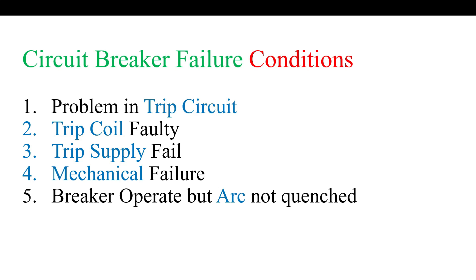The fifth condition, also called a failure condition in literature, is that the breaker operated but the arc was not quenched. This is a very rare case — the breaker operates but the quenching media, for example SF6, oil, or air, is not capable of quenching the arc. Because of the arc, current continues to flow. This is also a breaker failure condition and the CBF relay will operate.